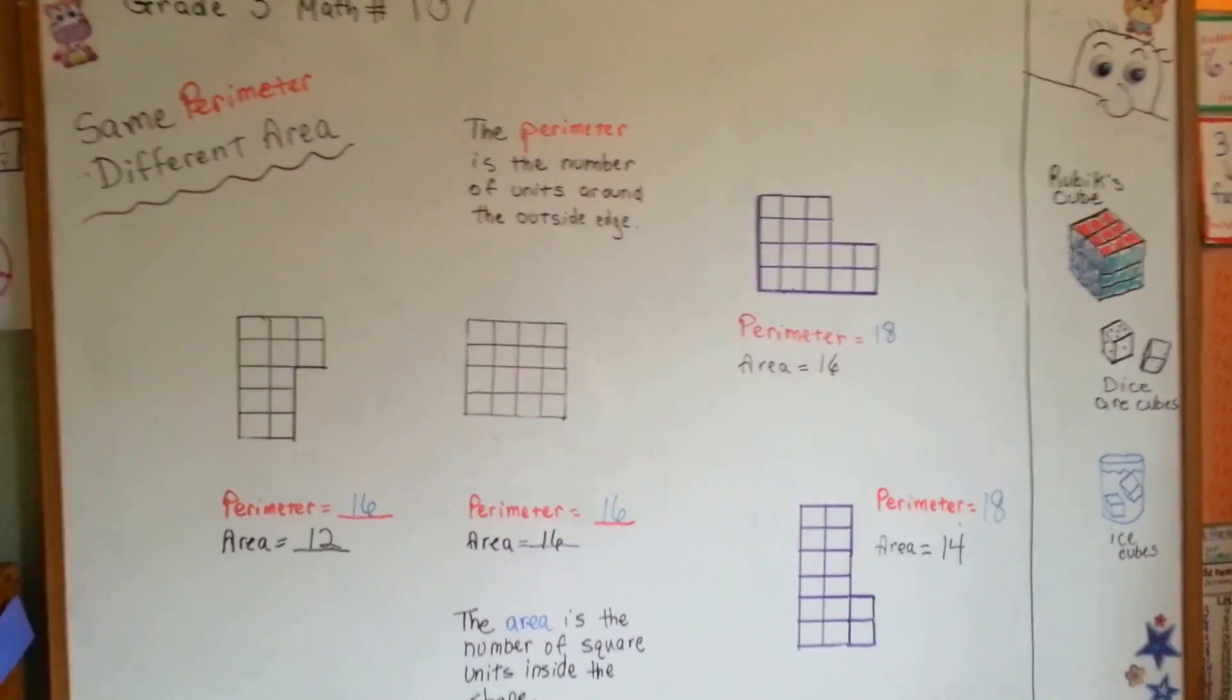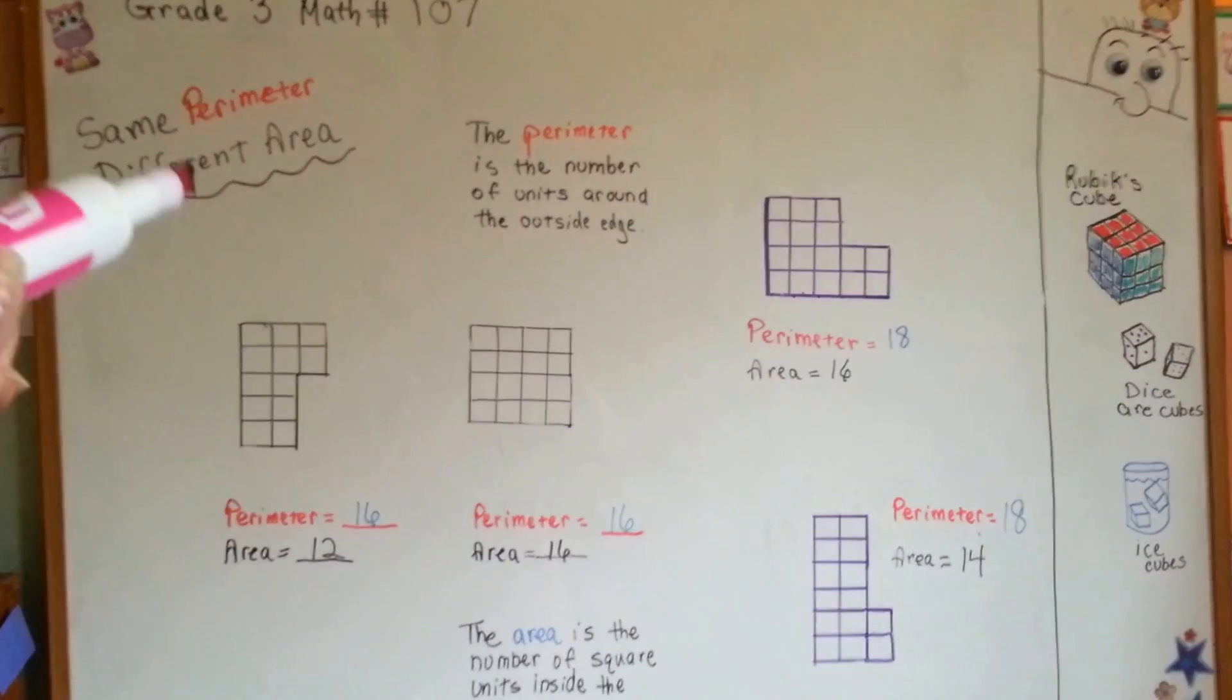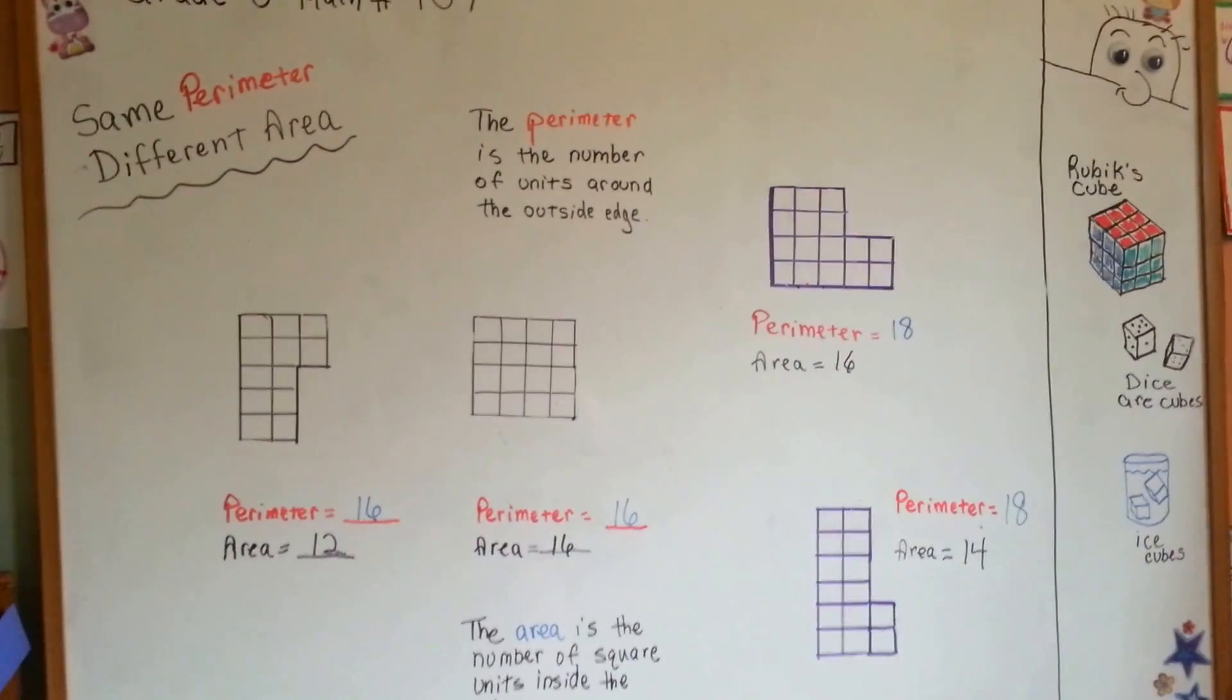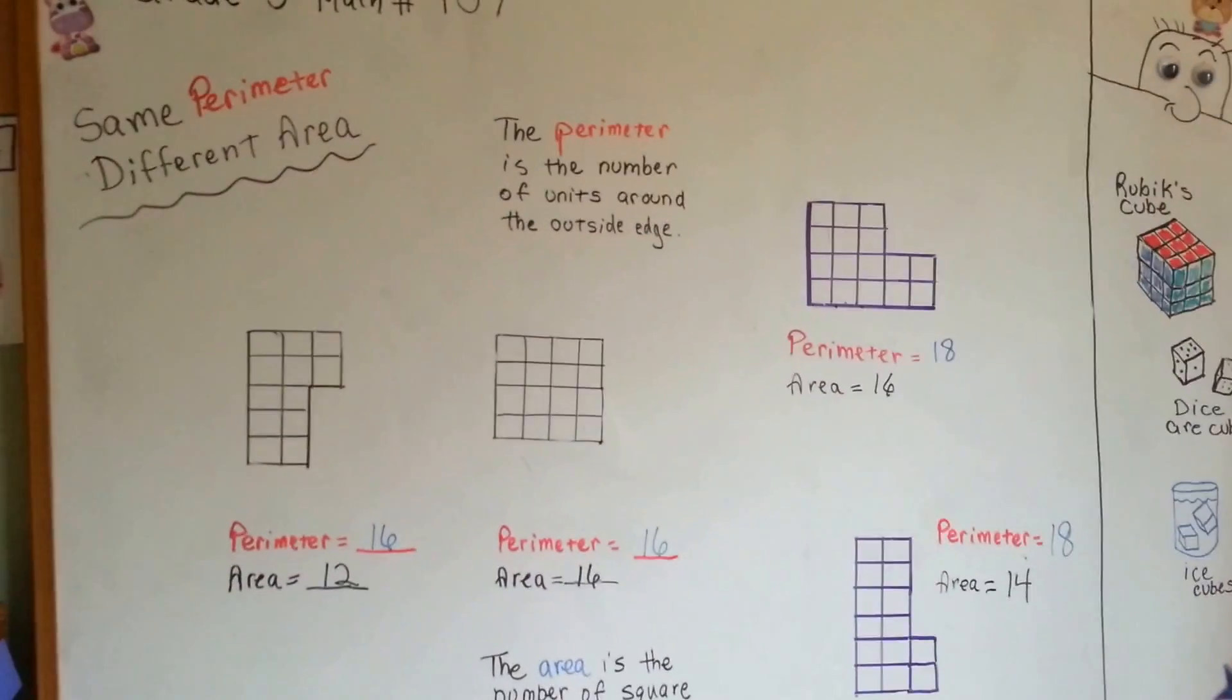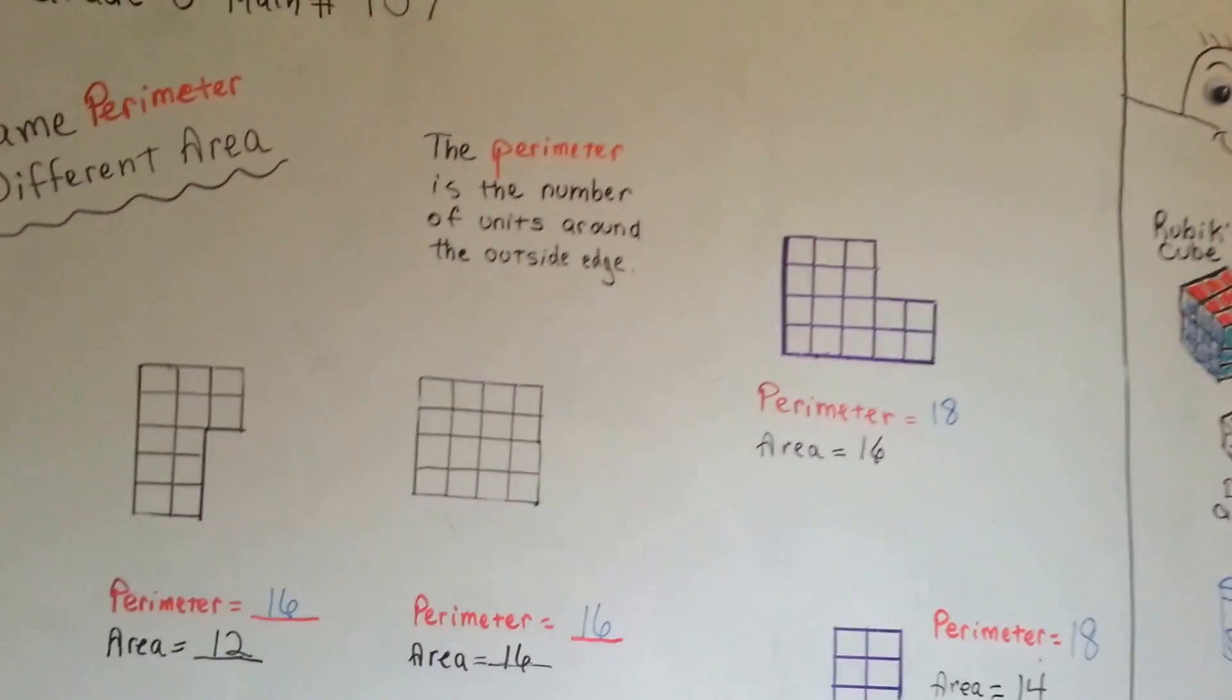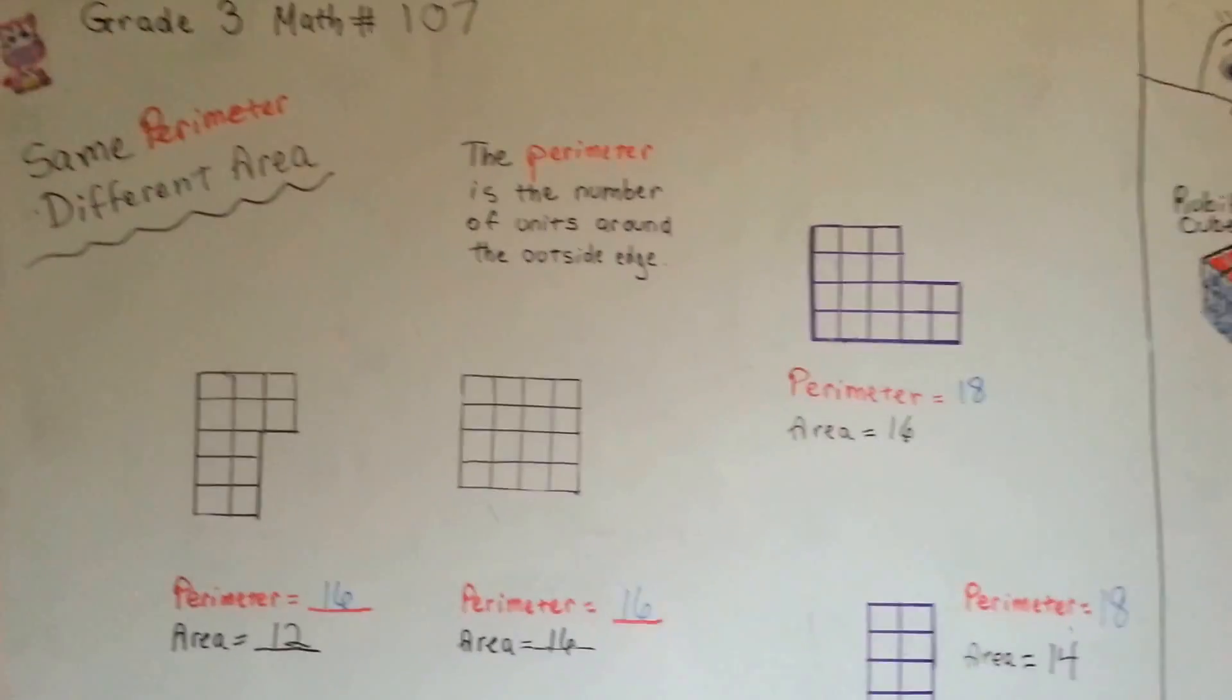So count your perimeters. Make sure that you've got your count correct, because it's not going to be the same as the area. They are two completely different things. I'll see you next video. We're going to talk about how you can have the same area but a different perimeter. I'll see you there. Bye.